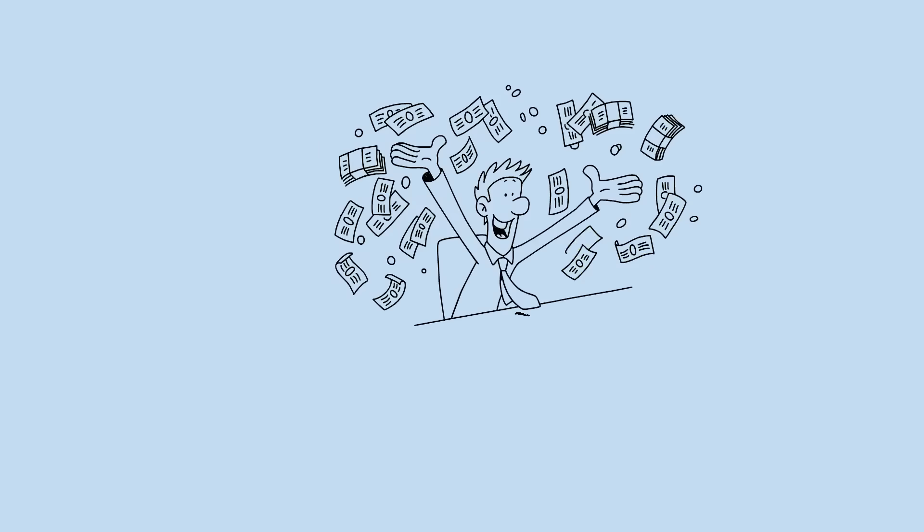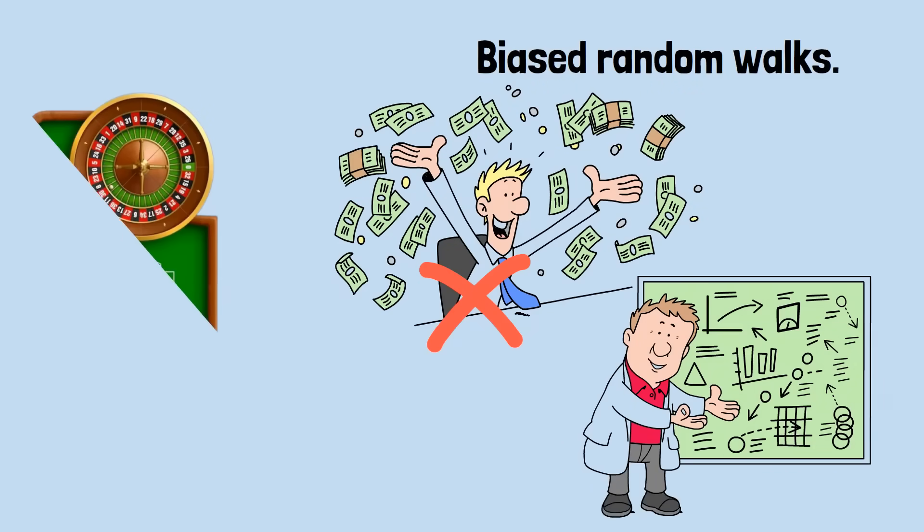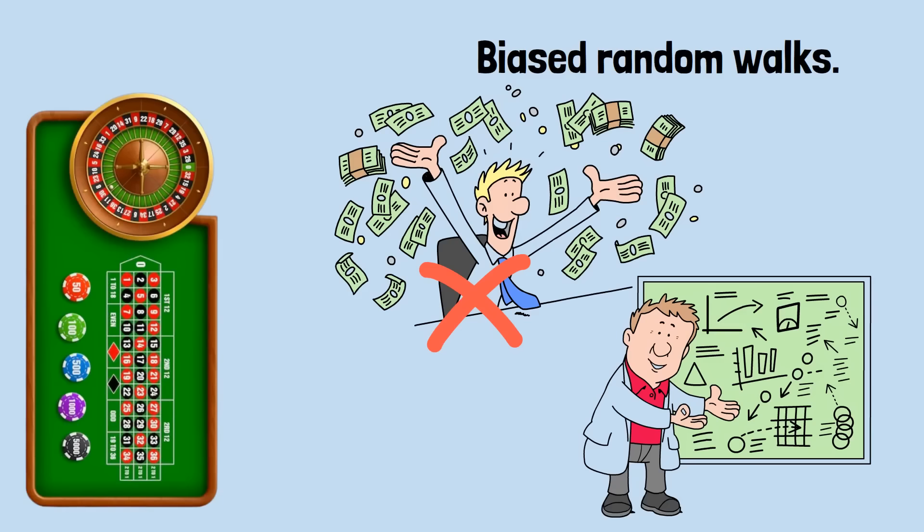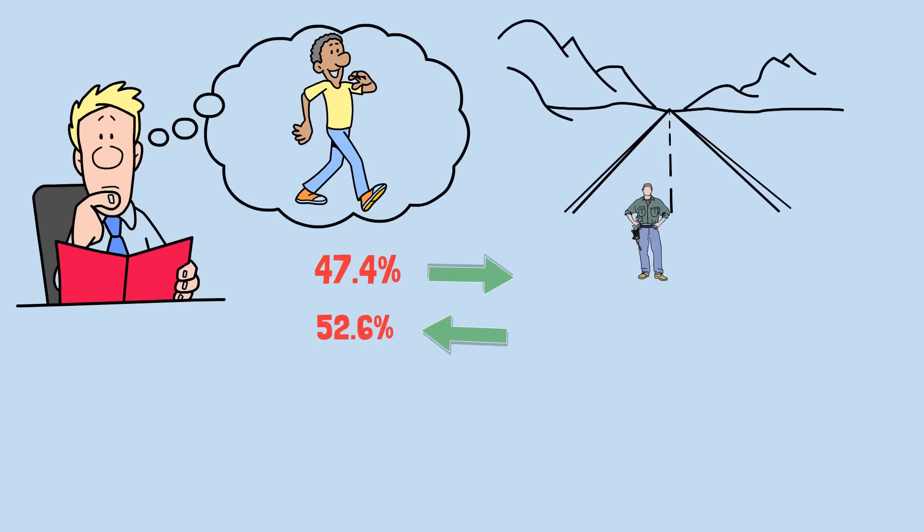The reason Carlos's massive bankroll barely helps him lies in the fundamental mathematics of biased random walks. In roulette, you're slightly more likely to lose each spin than win. Over time, this small bias compounds exponentially. Think of it this way: imagine you're walking along a path where each step has a 47.4% chance of moving you forward and a 52.6% chance of moving you backwards. Even if you start very far from the cliff behind you, the backward bias means you'll almost certainly eventually reach that cliff, no matter how far away it initially seemed.